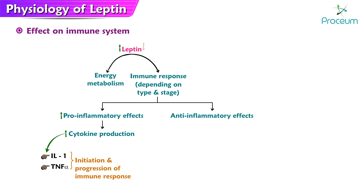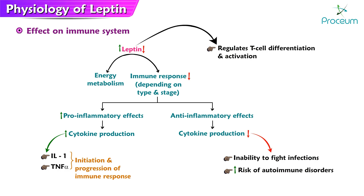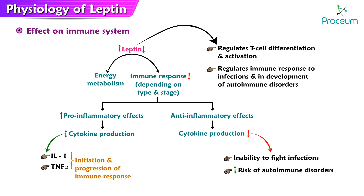On the other hand, low levels of leptin have been linked to a decreased immune response and reduced production of cytokines, which can result in an impaired ability to fight infections and a higher risk of developing autoimmune disorders. In addition, leptin has been shown to play a role in the regulation of T-cell differentiation and activation, and in the regulation of the immune response to infections and in the development of autoimmune disorders.